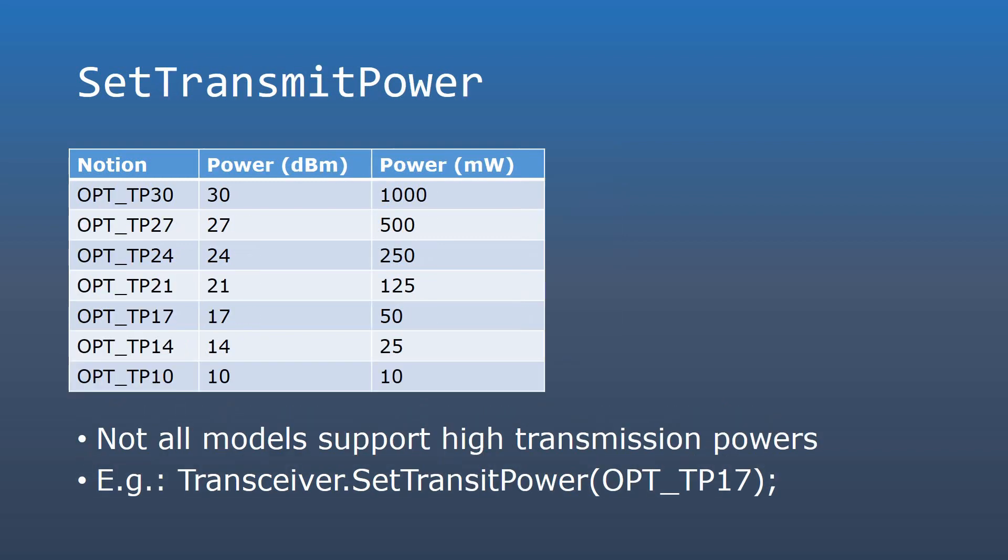The eByte library allows you to set the transmission power in decibels. Some modules support up to 20 decibels, while others can go up to 30. You should refer to your local regulations to check the maximum transmission power that is allowed.